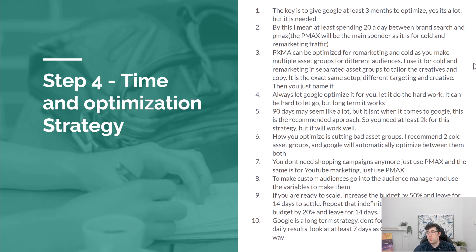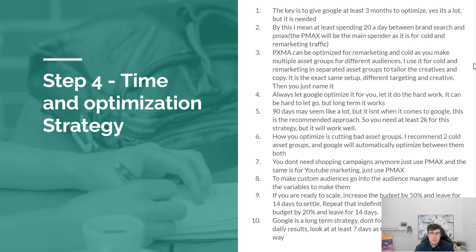If you see results, increase your budget. To scale, increase it by 20-50%. If you're more conservative, go 20%; if you're comfortable spending more, go up to 50%. A 50% increase will spend a lot and taper out over time. Go into audience manager to make custom audiences using variables — that's for scaling, not needed for beginners. Google is a long-term strategy — P Max does most of it, just make a couple of changes per month.